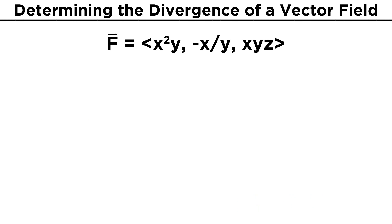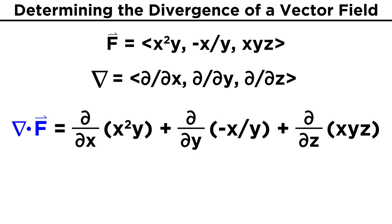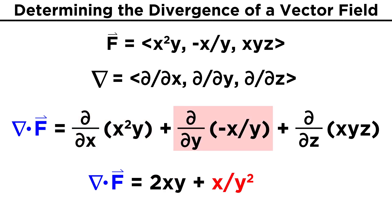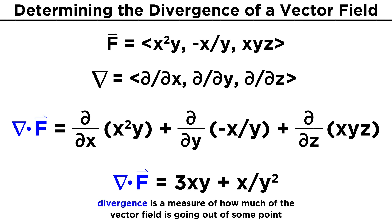Consider the vector field F = (x²y, -x/y, xyz). To find the divergence, we will take del dot this expression, which gives (d/dx)(x²y) + (d/dy)(-x/y) + (d/dz)(xyz). All of these derivatives follow the power rule that we already know, so we end up with 2xy + x/y² + xy, which simplifies to 3xy + x/y². We will get more into the application of divergence in a future tutorial, but for now you can think of it as a measure of how much of the vector field is going out of some point.